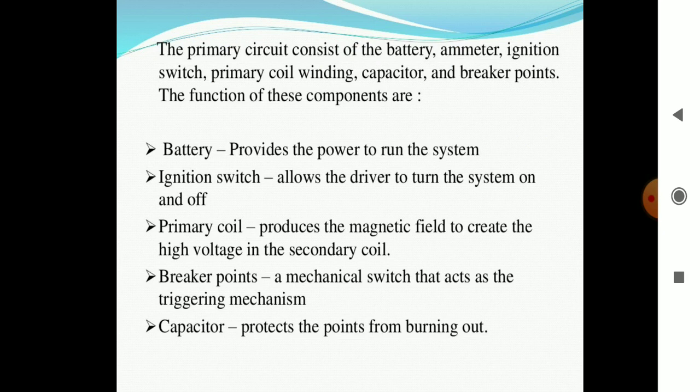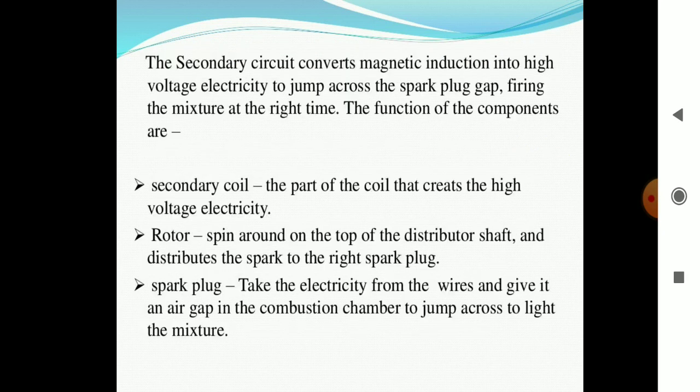The secondary circuit converts the magnetic induction into high voltage electricity which can jump across the spark plug and fires the mixture at the right time. The function of components are: the secondary coil part of the coil that creates high voltage electricity, and rotor that spins around the top of the distributor shaft and distributes the spark to the right spark plug.